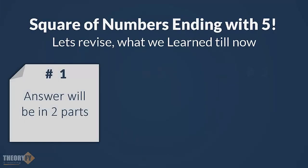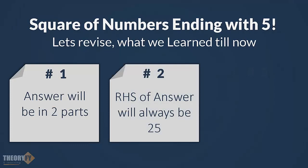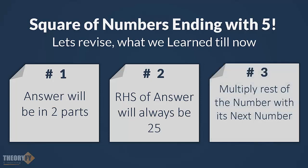Let's revise what we have done. Step 1: remember that the answer will come in two parts. The RHS of the answer will always be 25. Then multiply the rest of the number with its next number. If the rest of the part is 5, then multiply it with 6. If it is 11, then multiply it with 12.